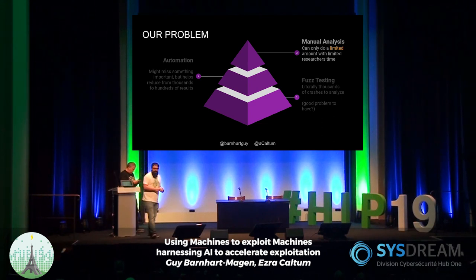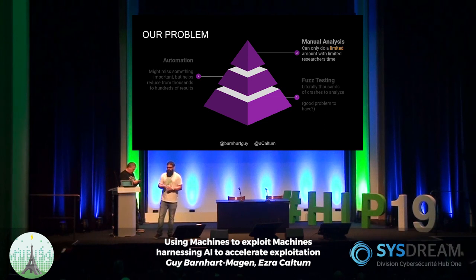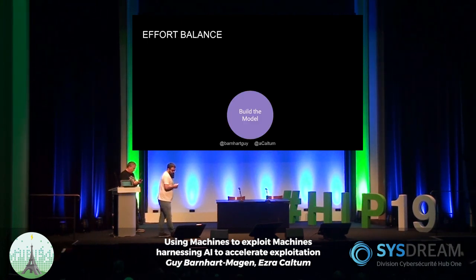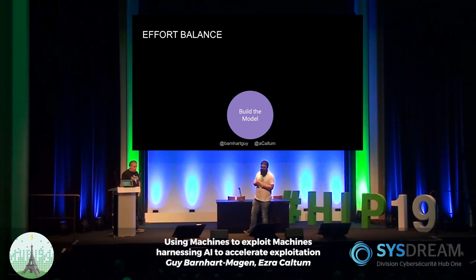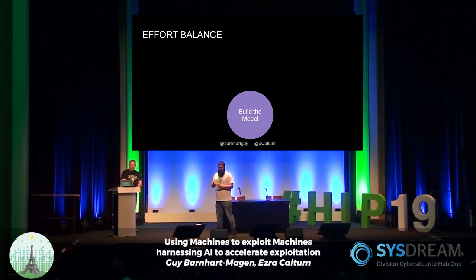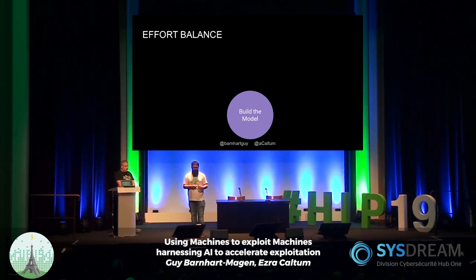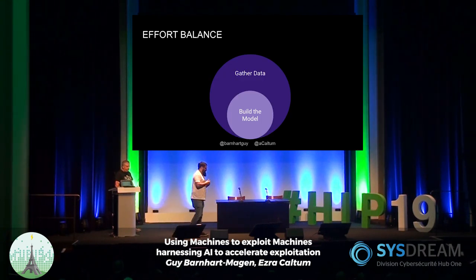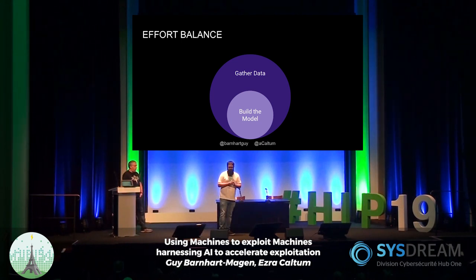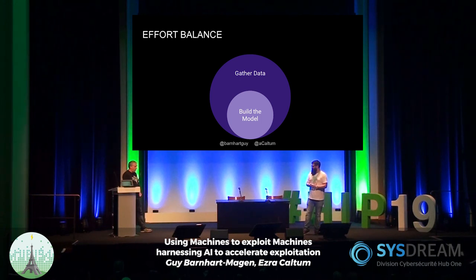Automatic analysis helps us reduce the thousands of crashes we have into just hundreds of results. But if we are doing this work manually, when it gets to the actual researcher trying to find exploitable crashes, it's not something that can really scale. It takes time, it requires manual work. When we started thinking about this problem, we thought that the main work would be building the machine learning model, but we identified that the actual problem was gathering the data to train machines to do our work.